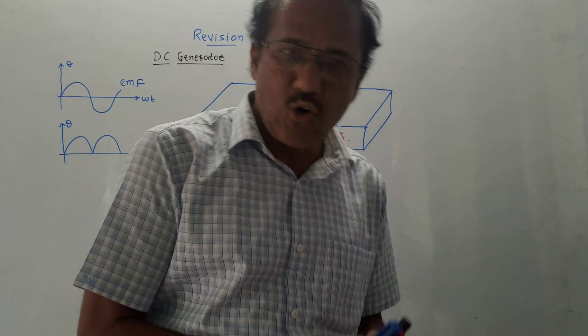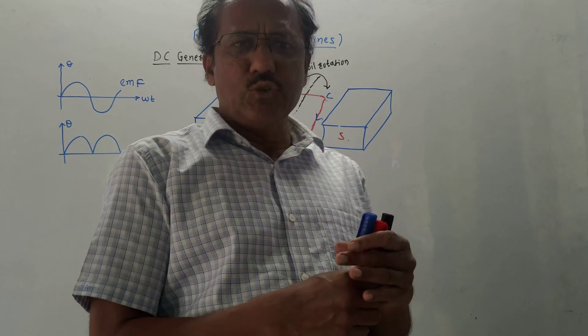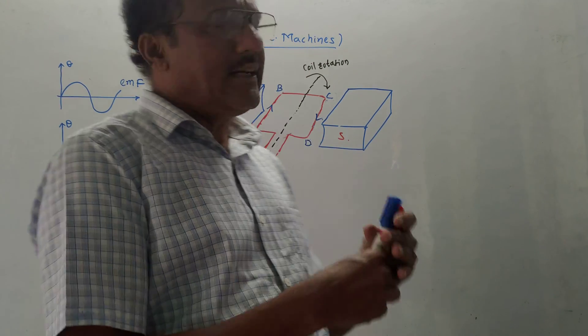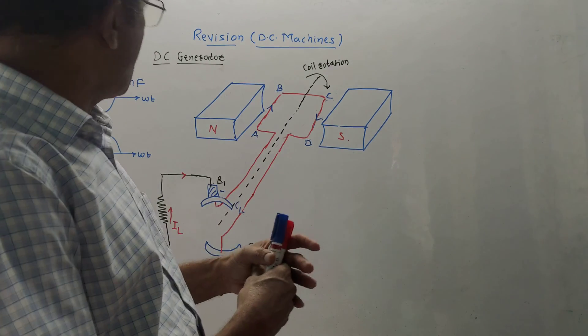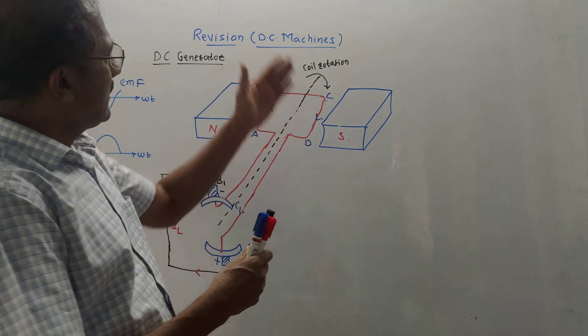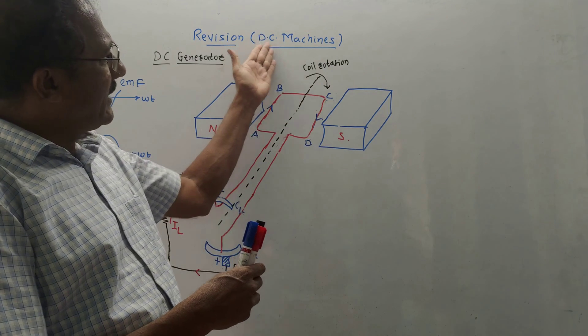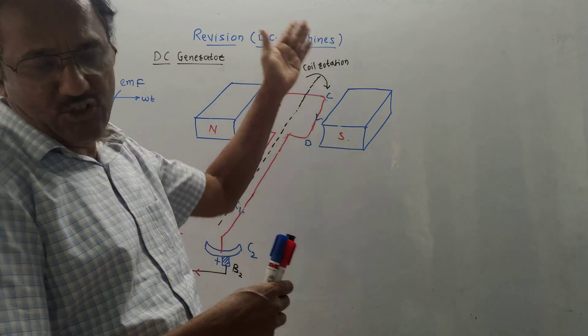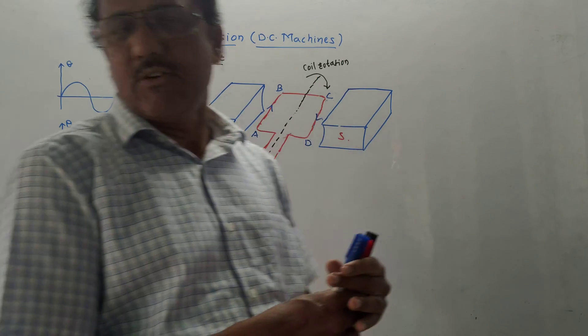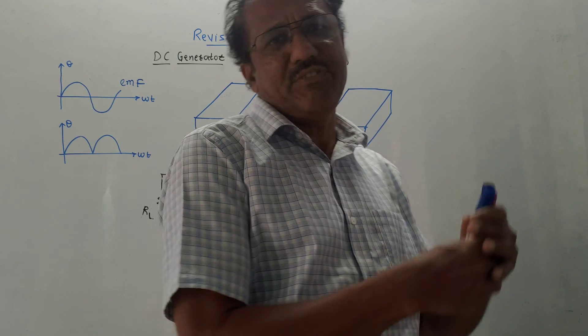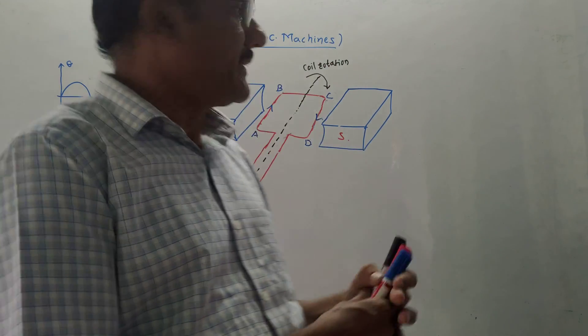Hello and welcome, dear students. This is the revision lecture for the topic DC machines. It is unit number 4 from the subject electrical circuits.